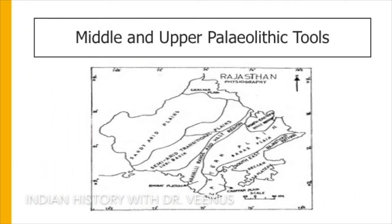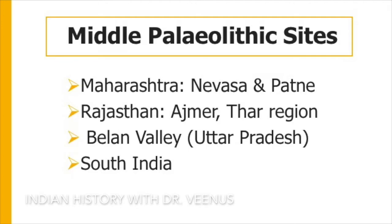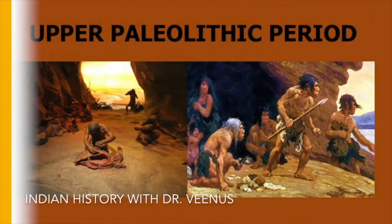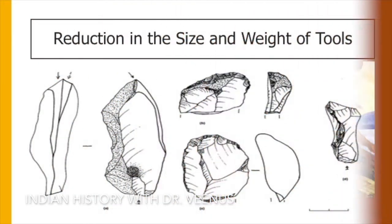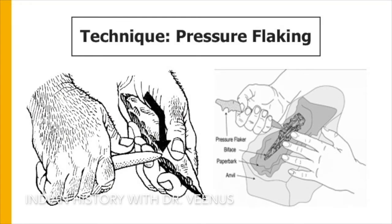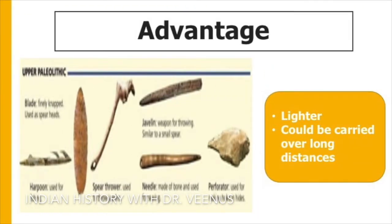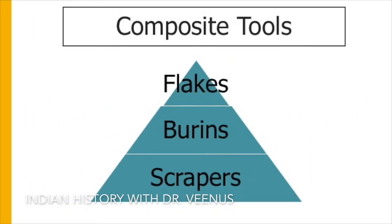Middle and Upper Paleolithic tools are also found around Jaisalmer. In Maharashtra, Nevasa and Patne are the most important sites which yielded Upper Paleolithic finds. The Upper Paleolithic assemblage was marked by further reduction in the size and weight of tools, which were now dominated by parallel-sided blades and burins. The technique used was pressure flaking, which produced smaller tools with more effective cutting edges and also resulted in less wastage of raw material. The main advantage of Upper Paleolithic tools was that, being lighter, they could be carried over long distances if necessary. The Upper Paleolithic mainly sees the coming of blade tools made on flakes, such as burins and parallel-sided blades.